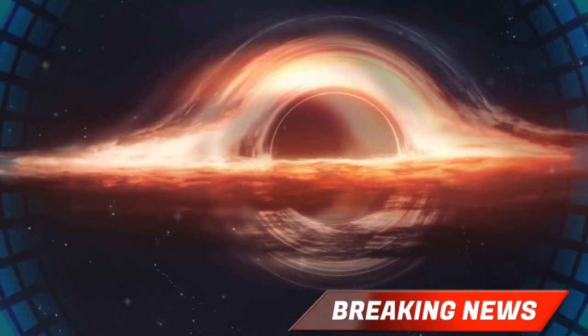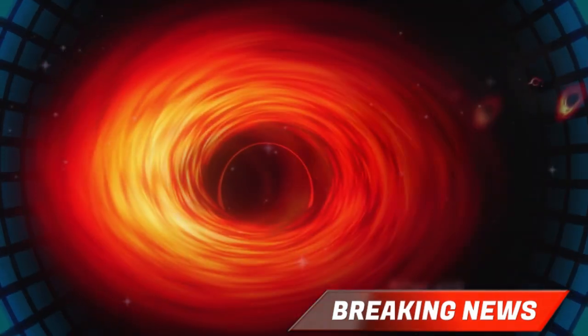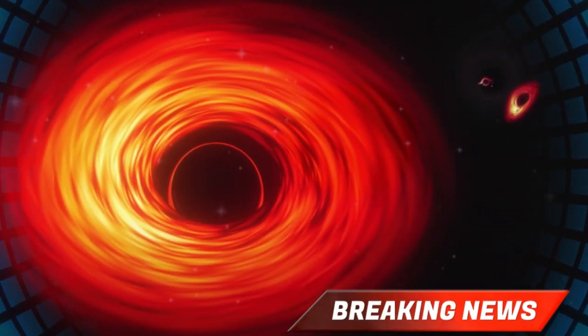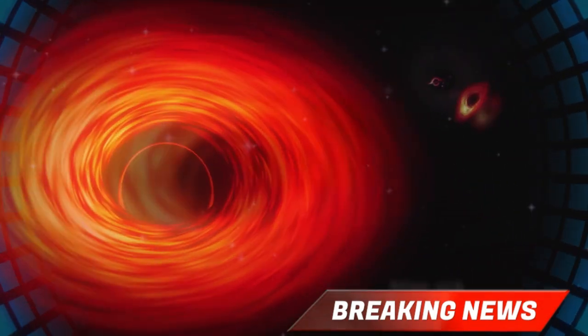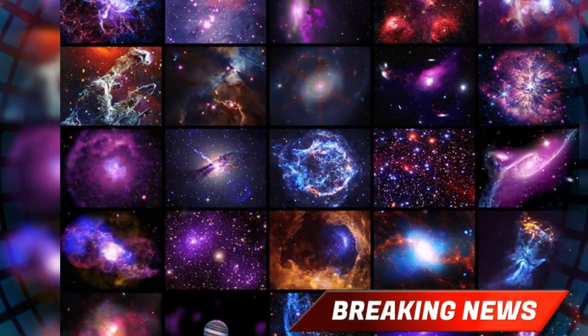But here's the shocker. RACS J0320-35 is not obeying the rules. According to the data, this black hole is growing at 2.4 times the Eddington limit, and somehow it hasn't blown itself apart or collapsed into instability.